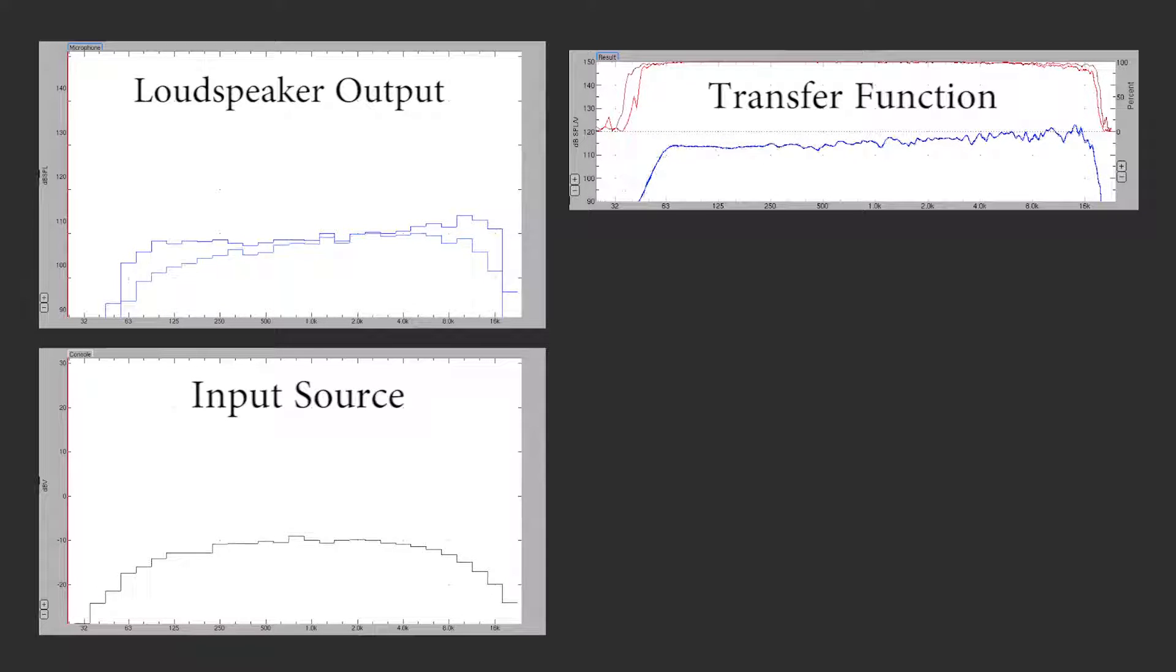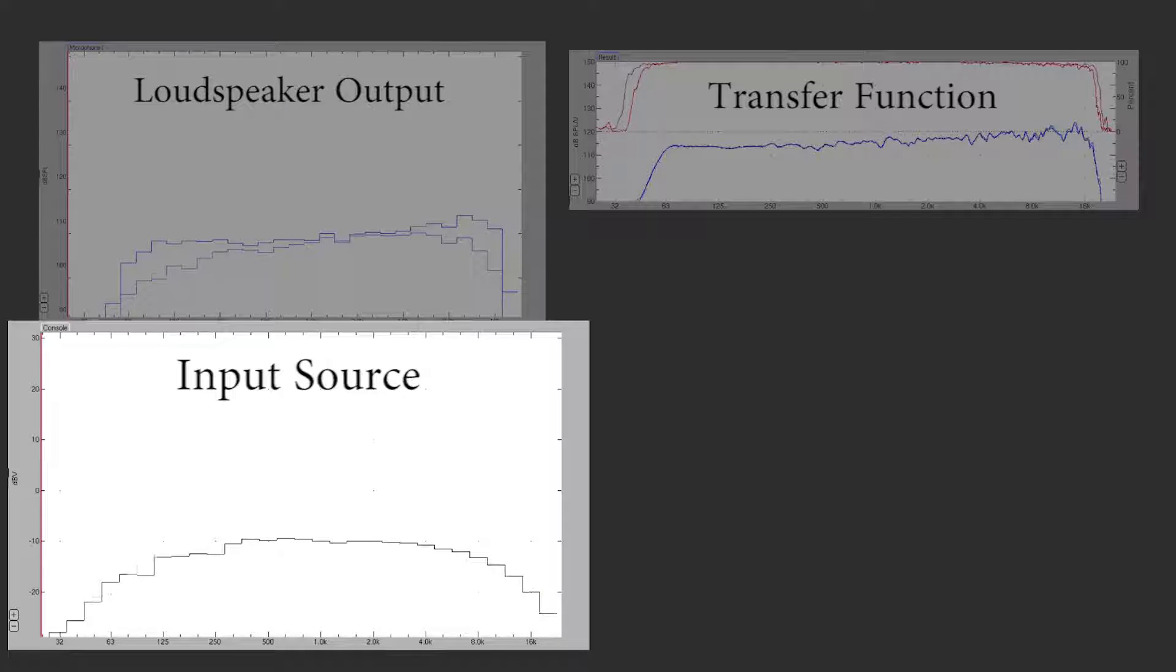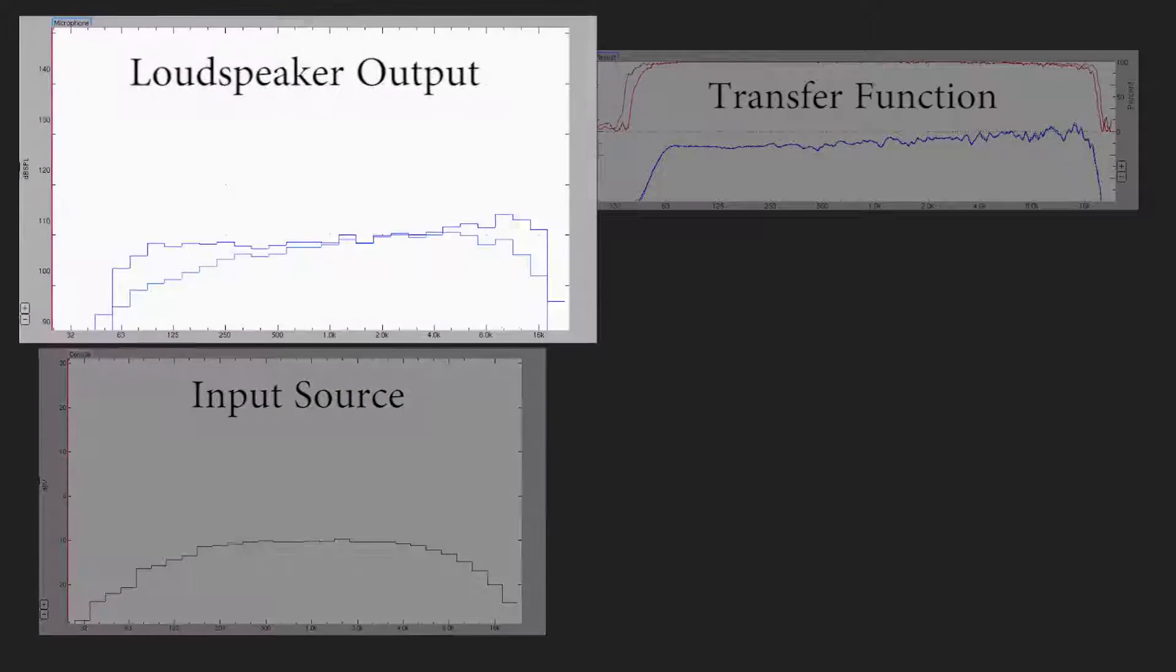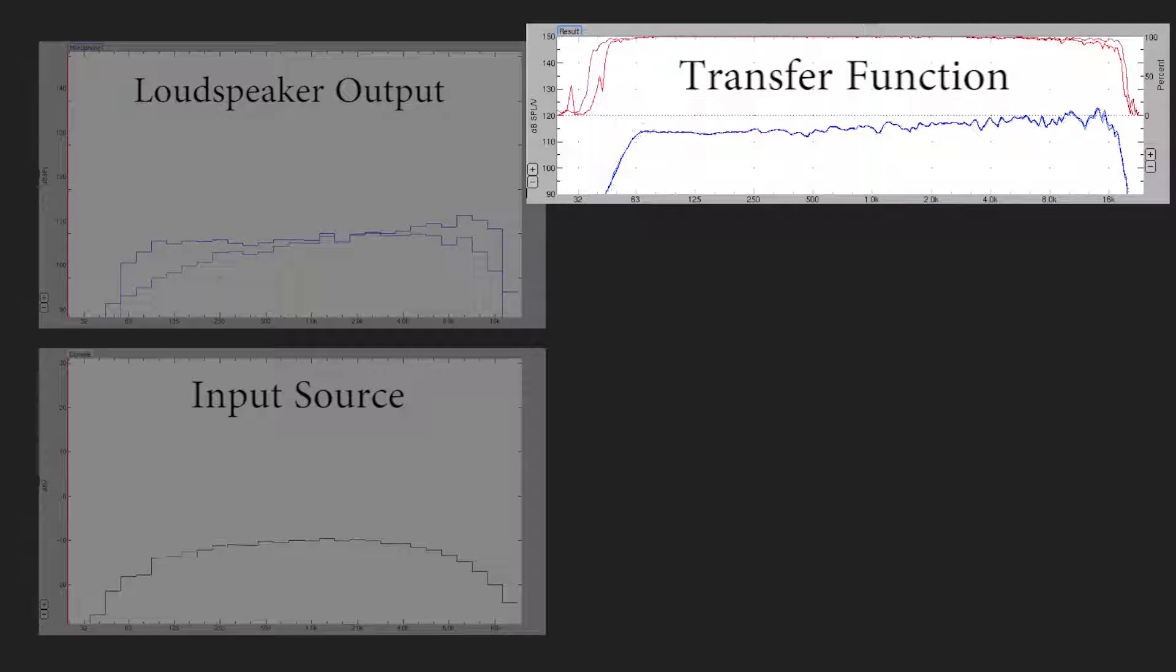Compared to pink noise, the source looks different, as does the loudspeaker output. But the transfer function remains the same because the input-to-output relationship does not change. The transfer function is independent of the signal content.